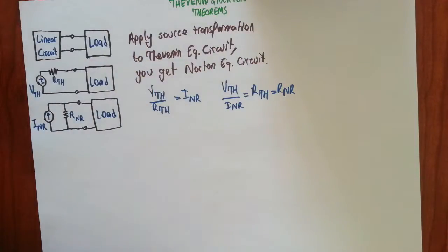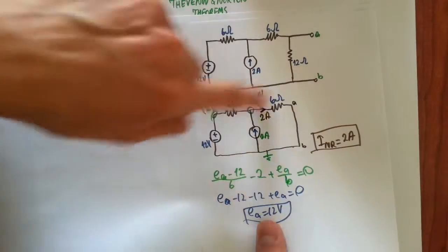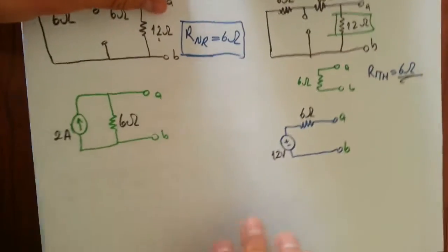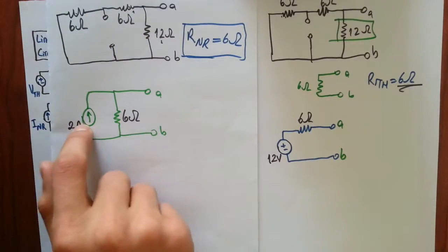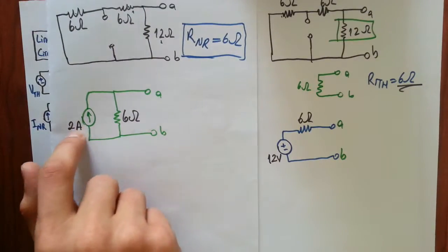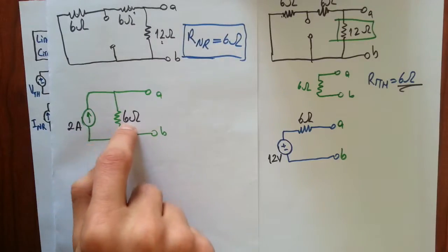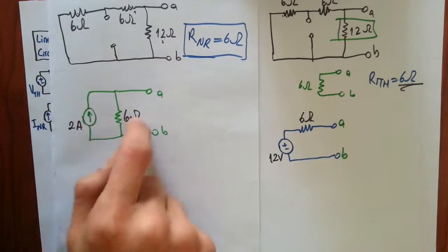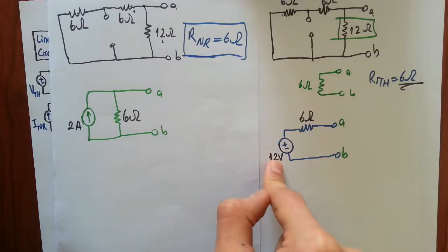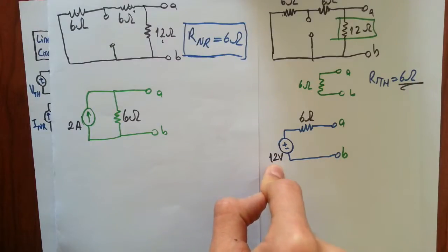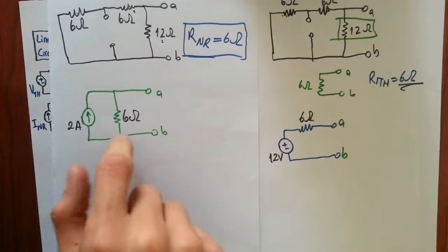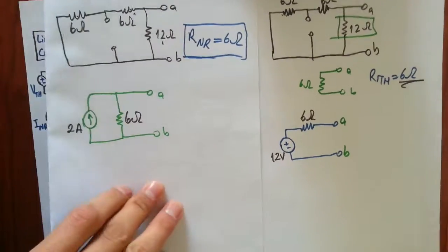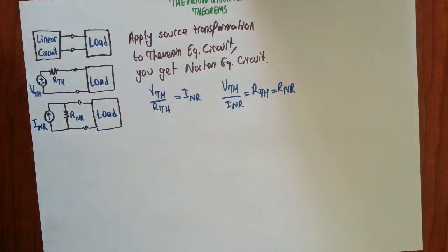Let me show you another example. Remember this circuit — we have found the Thevenin equivalent and Norton equivalent of that. We found the Norton current is 2 amps and Norton resistance is 6 ohms. If you multiply them, what you get is the Thevenin voltage, which is 12 volts. And the Thevenin resistance is the same as the Norton resistance.